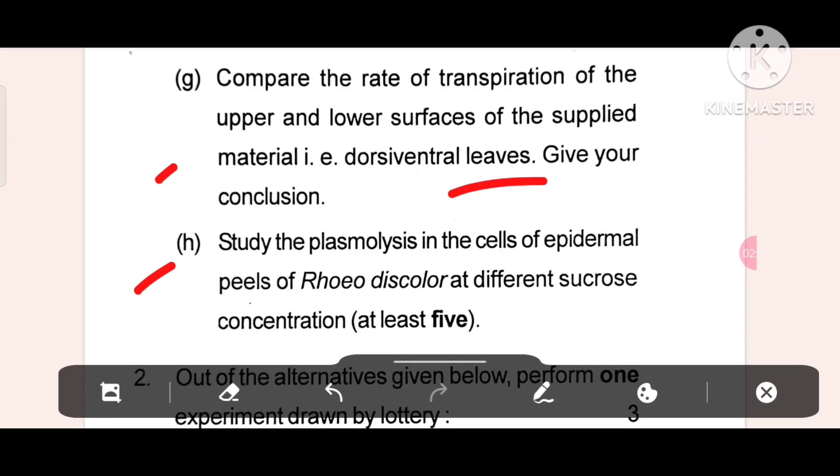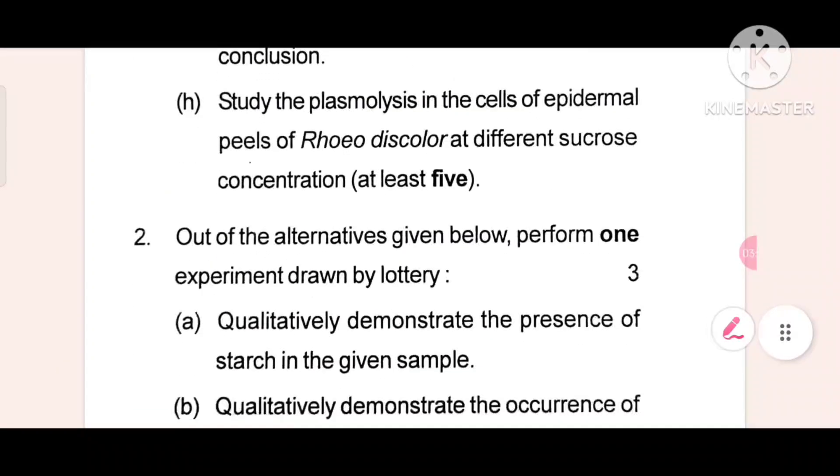Study the plasmolysis in the cells of epidermal peels of Rhoeo discolor at different sucrose concentrations, at least five. These are all the seven-seven marker questions.